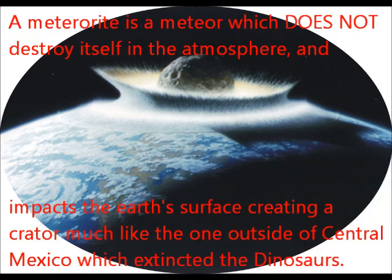A meteorite is a meteoroid which does not completely destroy itself in the atmosphere and impacts with the Earth's surface, creating a crater — much like the one outside of central Mexico which extincted the dinosaurs.